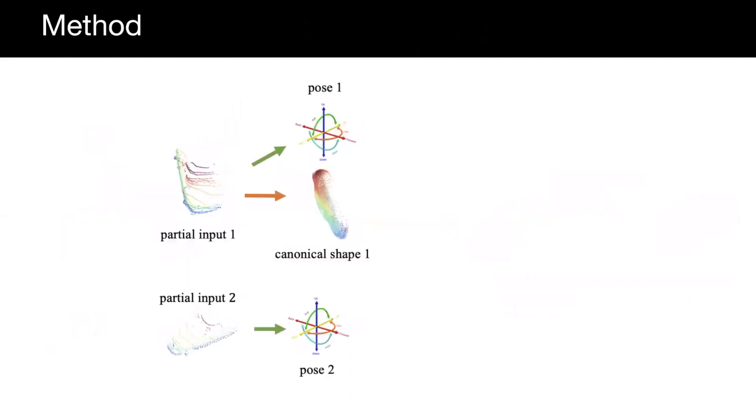Our key insight is that multiple views of a single object can correspond to the same complete shape. Given two partial point clouds of the same instance in the sensor frame, we predict both 3D shape and 6DOF pose for alignment to a learned canonical frame.